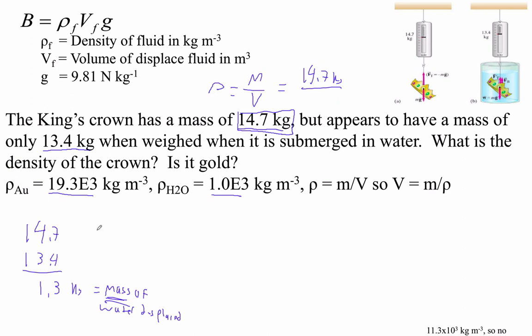So therefore, just using the density formula, I think we're not even going to use the buoyancy formula. Using the density formula, we can figure out the volume of the gold. The volume of the gold is going to be the mass of the water displaced divided by the density of water. I'm using the density formula, the same thing here. Okay, so that equals 1.3 divided by 1,000.